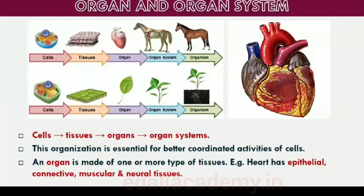The basic tissues mentioned above organize to form organs which in turn associate to form organ systems in multicellular organisms. Such an organization is essential for more efficient and better coordinated activities of millions of cells. Each organ in our body is made of one or more types of tissues. For example, our heart consists of all four types of tissues: epithelial, connective, muscular and neural. The complexity in organ and organ systems displays a certain discernible trend called evolutionary trend.